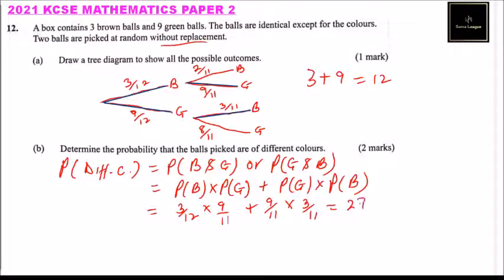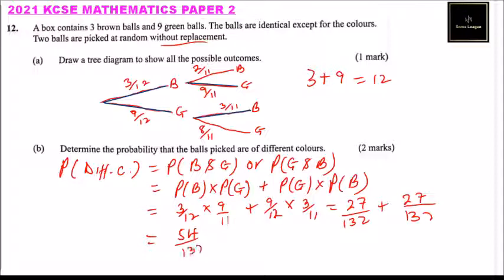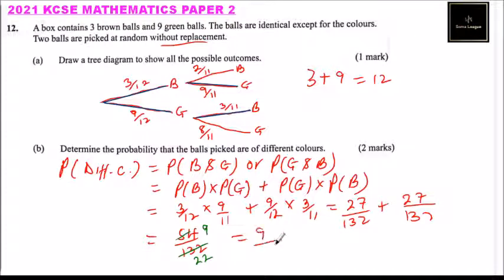Working this out gives 27 over 132 plus 27 over 132, which equals 54 over 132. Simplifying by dividing by 6 gives 9 over 22. So the probability that you pick two balls of different colors is 9 over 22. When you get to that stage you will be able to get the total three marks.